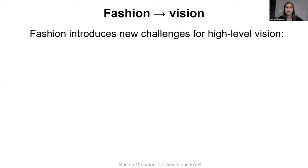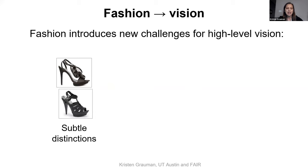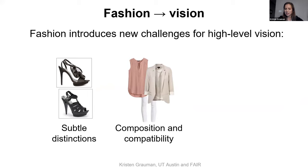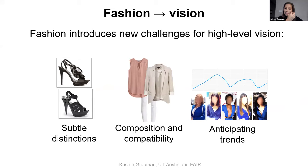The kind of problems I want to focus on: first is subtle distinction — if you're caring about shoes, it's not enough to know they're both black high heels; those fine-grain differences really matter. Second is composition compatibility — not just what is the same, but complementarity and how things go together. And finally, there's trend anticipation, forecasting, and understanding how at a large scale clothing is moving around the world and influencing culture.